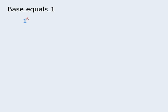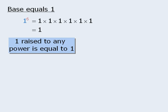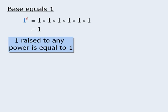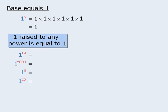Now let's examine some special properties related to exponents. The first property concerns expressions where the base is equal to 1. In this example, 1 to the power of 6 equals the product of 6 ones, which equals 1. In general, we can say that 1 raised to any power will always equal 1, so all of these expressions will evaluate to be 1.